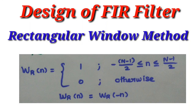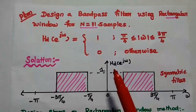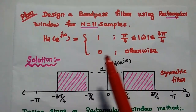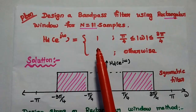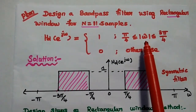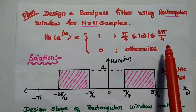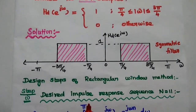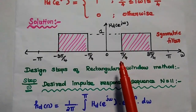Dear students, now we are going to solve an important problem in FIR filter design using rectangular window. We are going to design a band pass filter using rectangular window for N equal to 11 samples. The given frequency response Hd(e^jω) is equal to 1 when the modulus of frequency ω is greater than or equal to π/4 and less than or equal to 3π/4. Its value is 0 otherwise. In the solution part, first we have to draw the frequency response diagram for the given values.